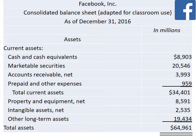Current assets are first. Current assets are those assets that will be used up or converted to cash within one year or operating cycle. Assets are listed in a particular order: first current assets, then long-term assets. Current assets are listed from most liquid to least liquid — meaning roughly closest to cash. Cash is always the first current asset. Many companies, like Facebook, call their cash 'cash and cash equivalents.' Next we see marketable securities and accounts receivable net. The last current asset listed here is prepaid and other expenses.